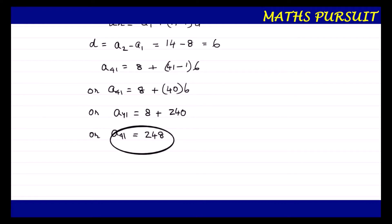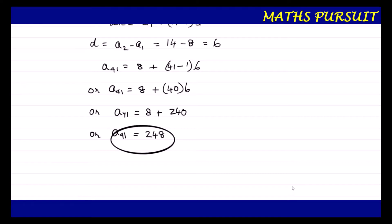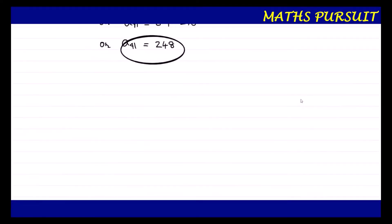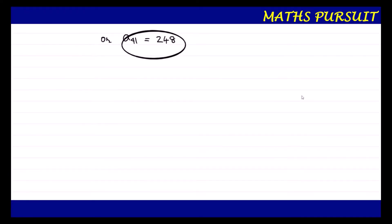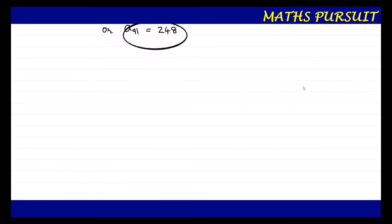Now we will put this value of a_41 into the question and try to find out what is being asked. Just keep in mind that a_41 = 248. As per the question: which term of the arithmetic progression 8, 14, 20, 26 will be 72 more than its 41st term?